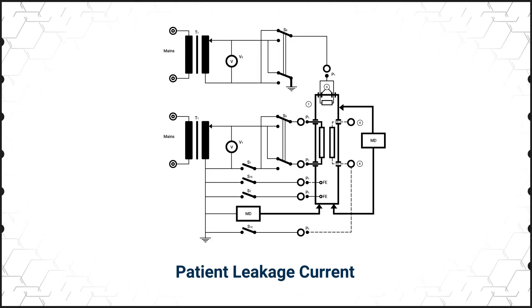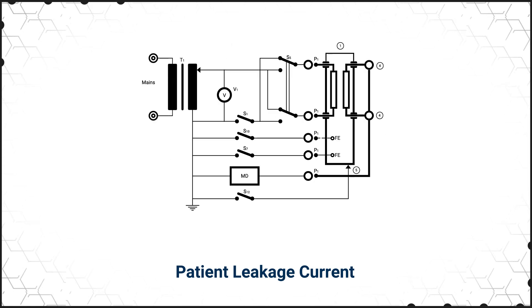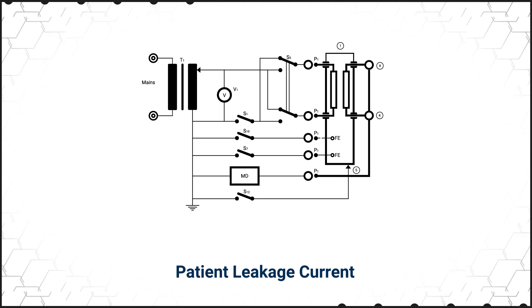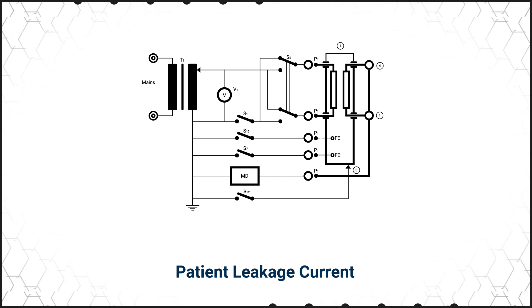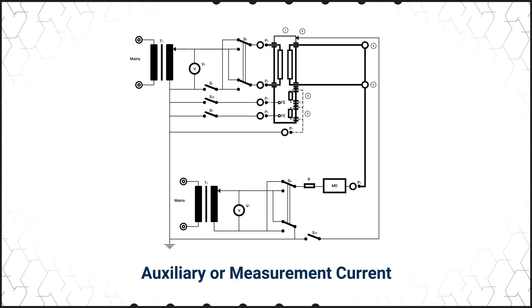Patient leakage current comes in different forms. First is the current that flows through the applied parts or patient connections to earth. Next is current that results from the patient contacting an external voltage, causing current to flow back through the applied parts to the power supply earth. Finally, the auxiliary or measurement current is the current that flows from one applied part to the others through the patient.